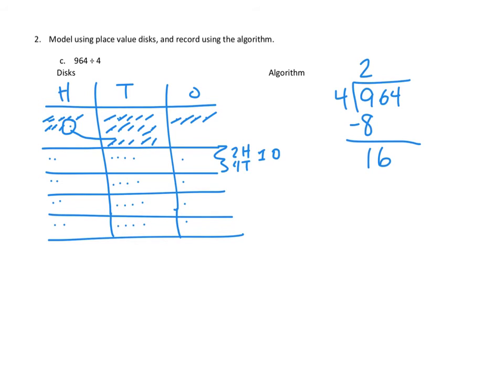Now we pull down our next unit, which is tens, and we have 16 tens total. How many tens can we multiply by 4 and still fit into 16? We can do 4 tens, because 4 tens times 4 equals 16 tens. So we've used 16 of our 16 tens, leaving no tens remaining.